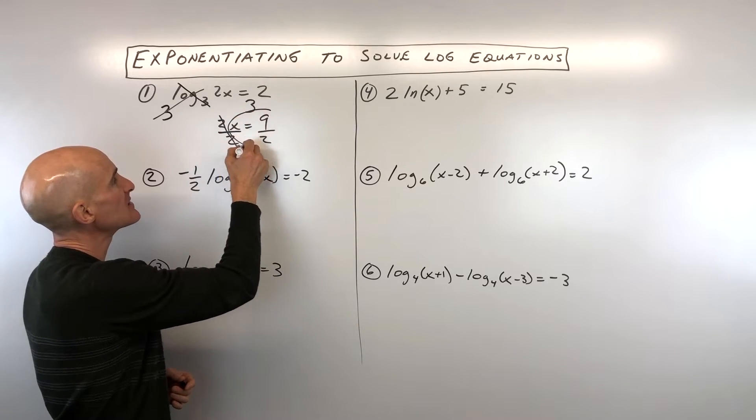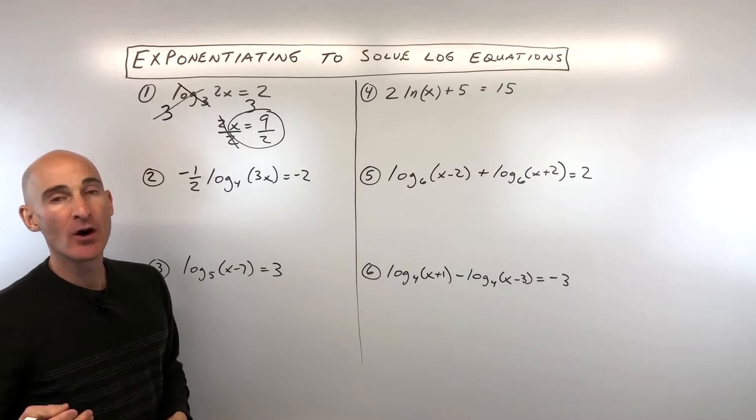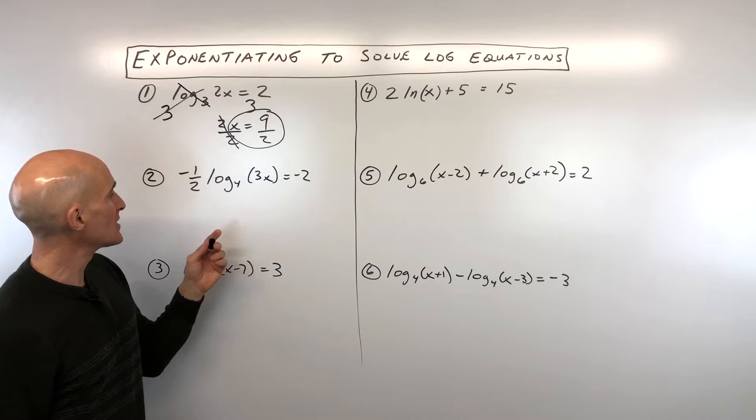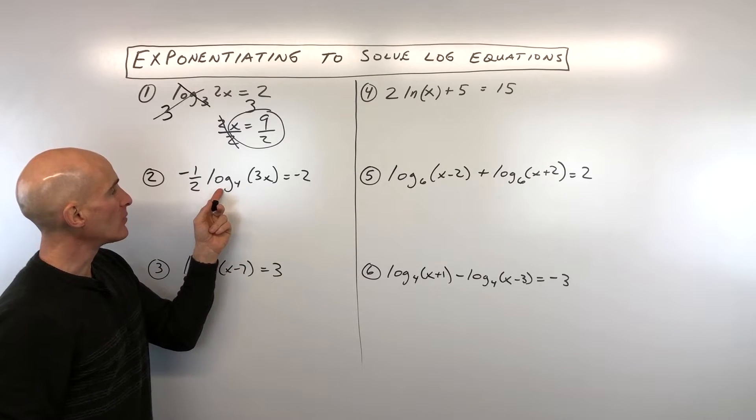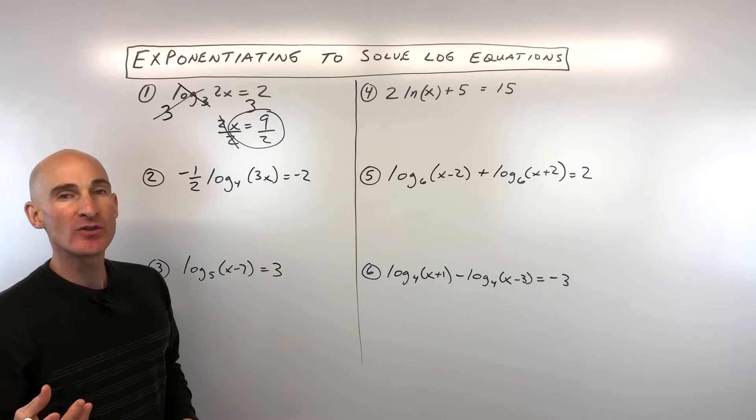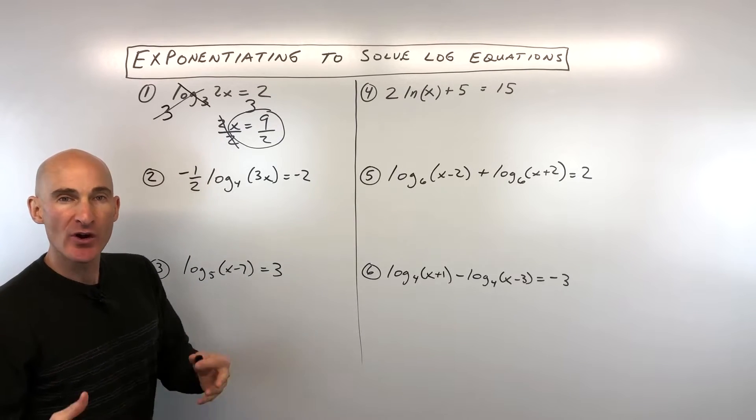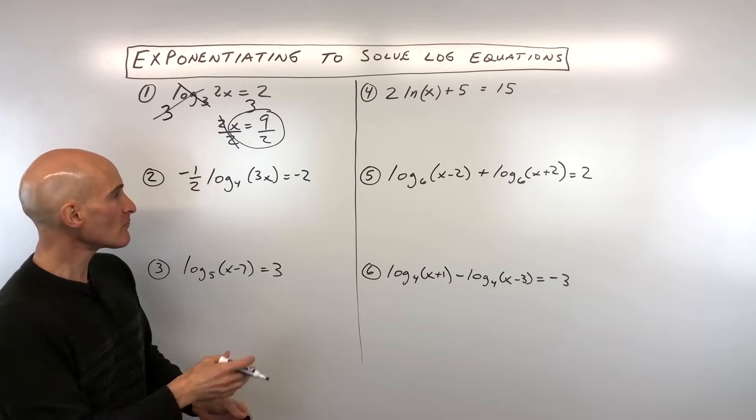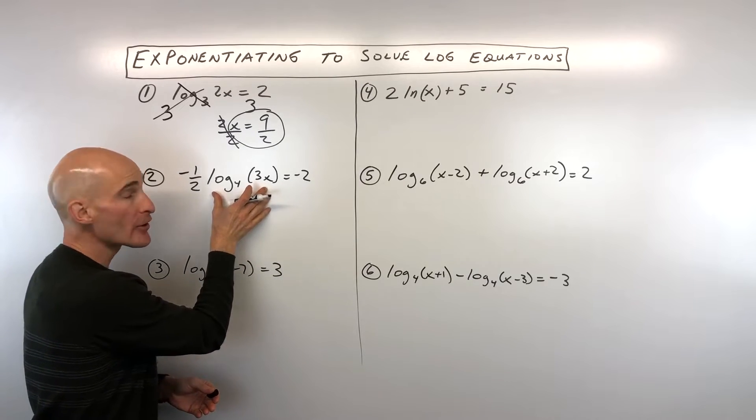And you can see that x equals 9 halves. Let's go to the next example, and I'll show you some other techniques here. So we've got negative 1 half log base 4 of 3x equals negative 2. So the idea here, just like in algebra, you know how you try to get the variable by itself?